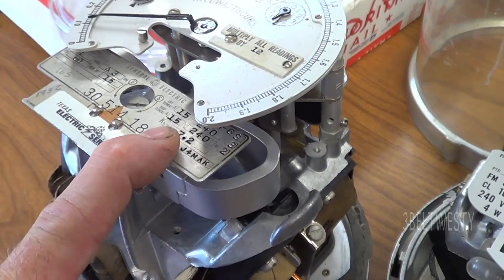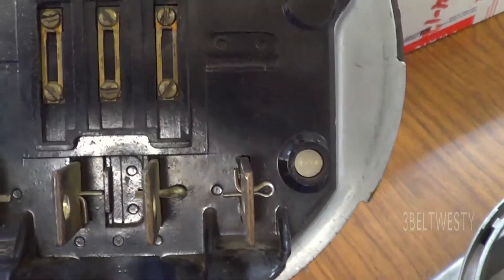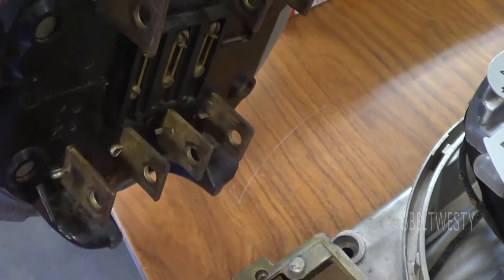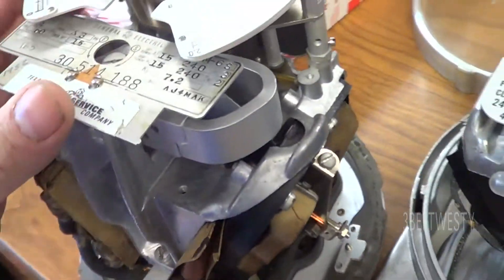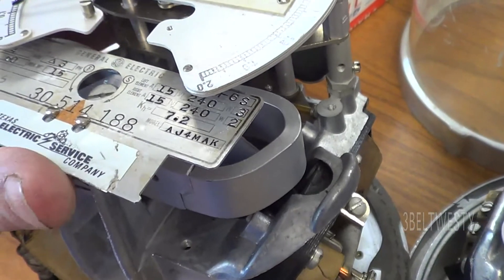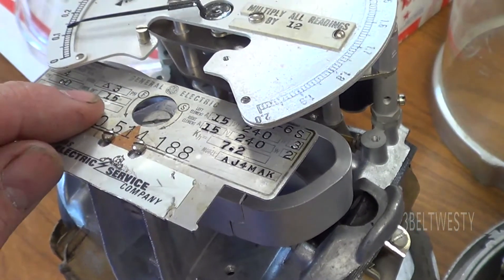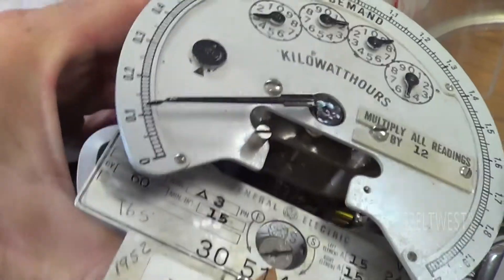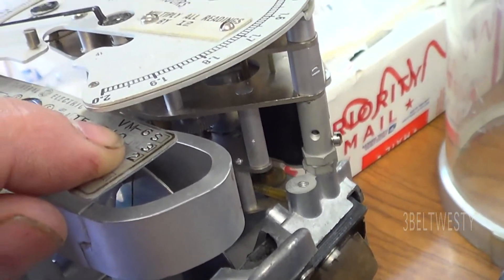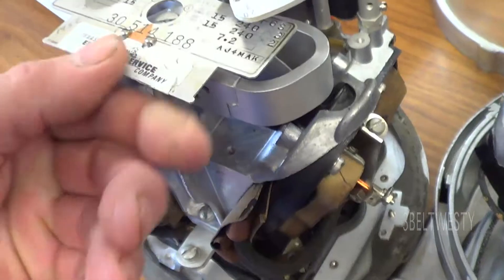They had a four to one overload protection so this is really a 60 amp meter. It has fairly big lugs on here, seven jaw. This will work on a three-phase delta with a high leg. Model AJ4 MAK, this is 240 volts, 7.2 kVA. It's got two elements here, there's the third element, three phase four wire delta. And it's a VM 6S.